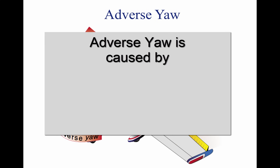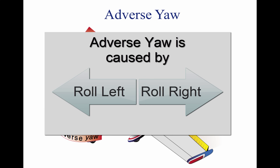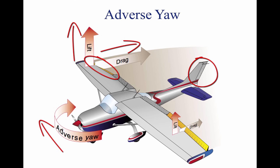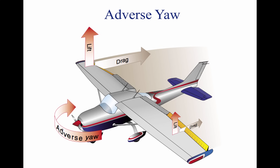Adverse yaw is caused when a plane rolls to the left or right. In a roll to the left, as illustrated, the right aileron moves down to provide more lift and roll the airplane to the left. During this process, the aileron also produces more drag. As a result, the plane yaws toward the raised wing, or to the outside of the bank as seen by the pilot. The pilot must apply rudder pressure to account for the adverse yaw. This effect is magnified at slower speeds because of the decreased effectiveness of the vertical stabilizer and rudder.